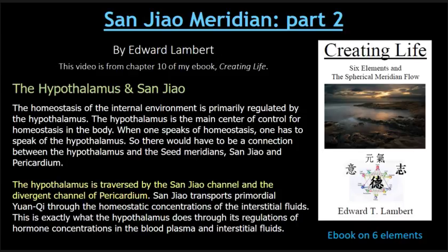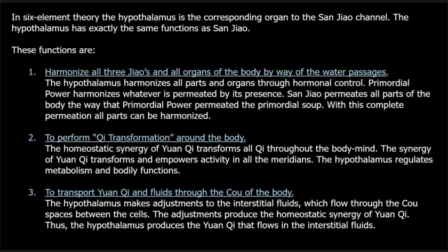Sanjiao transports primordial yuanqi through the homeostatic concentrations of the interstitial fluids. This is exactly what the hypothalamus does through its regulations of hormone concentrations in the blood plasma and interstitial fluids. In six-element theory, the hypothalamus is the corresponding organ to the Sanjiao channel. The hypothalamus has exactly the same functions as Sanjiao. First function: harmonize all three Jiaos and all organs of the body by way of the water passages. The hypothalamus harmonizes all parts and organs through hormonal control. Primordial power harmonizes whatever is permeated by its presence. Sanjiao permeates all parts of the body the way that primordial power permeated the primordial soup. With this complete permeation, all parts can be harmonized.